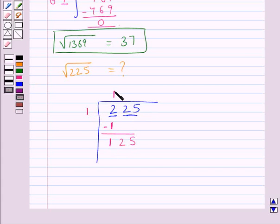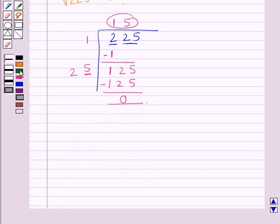We double this quotient and write 2 here with a blank. 25 times 5 is 125. We write 5 in this blank and 5 in the quotient also. When we subtract 125 from 125, we get 0 as the remainder. This quotient is the square root of 225. Hence, the square root of 225 equals 15.